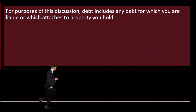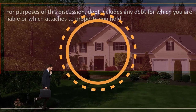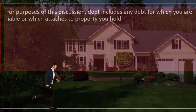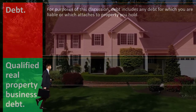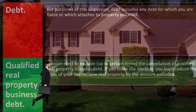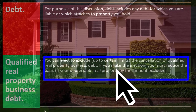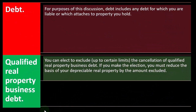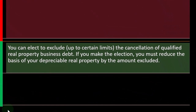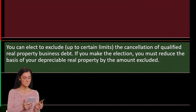Debt, for purposes of this discussion, includes any debt for which you are liable or which attaches to property you hold — meaning the property serves as collateral, so if you don't pay, the creditor may repossess it. Qualified real property business debt: you can elect to exclude up to certain limits the cancellation of qualified real property business debt. If you make the election, you must reduce the basis of your depreciable real property by the excluded amount.